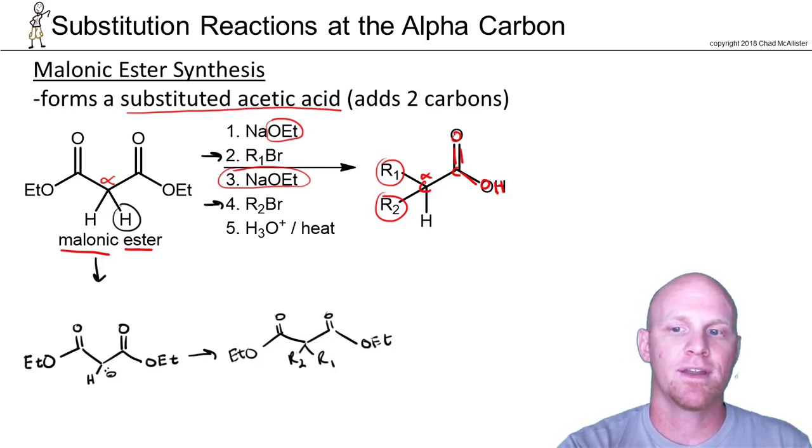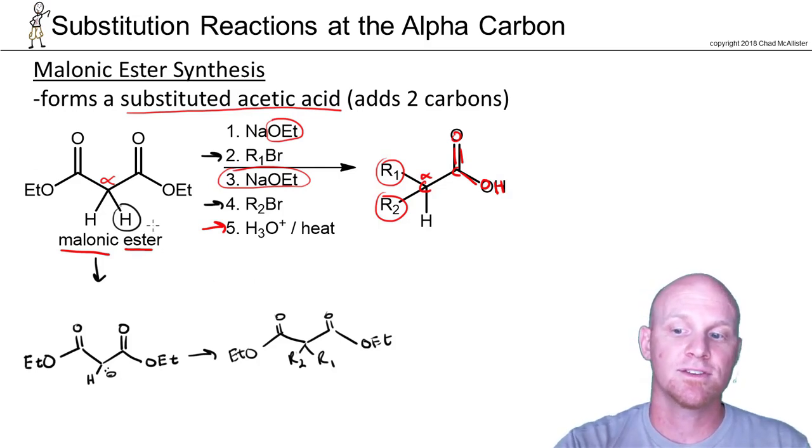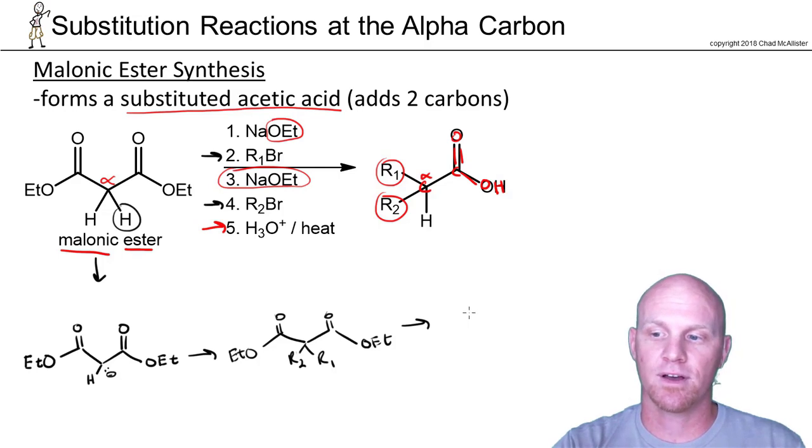From here on out, we're going to add some H3O+ and then heat it up. We've got to realize that we've got esters here, and any carboxylic acid derivative, including the esters, will turn into carboxylic acids when you add H3O+. So in this case, our molecule is going to turn into a dicarboxylic acid.